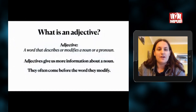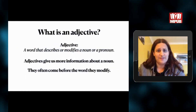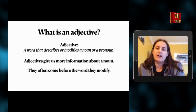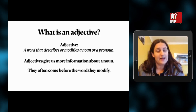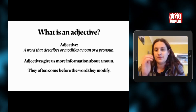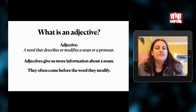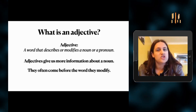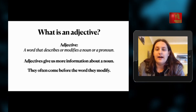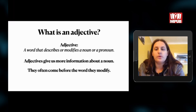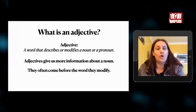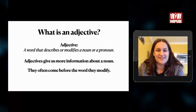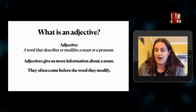So what is an adjective? It's a good place to start. An adjective is a word that describes or modifies a noun or a pronoun — something that gives you more information about a noun. The word 'modify' means to change. These sorts of words often come before the word that they change.